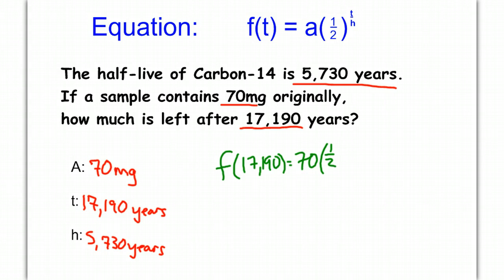times one-half. With half-life, it's always one-half. Our t, 17,190, divided by our h, 5,730.